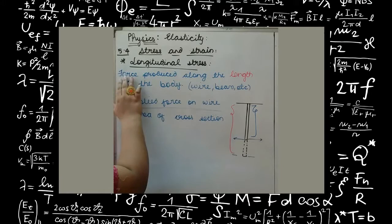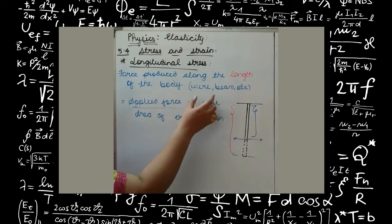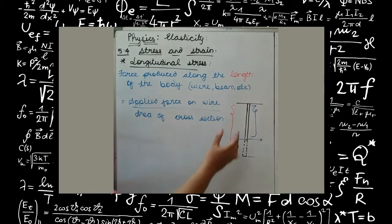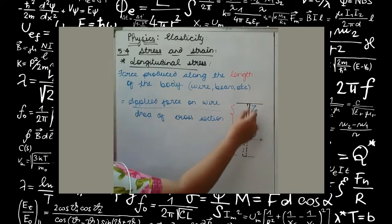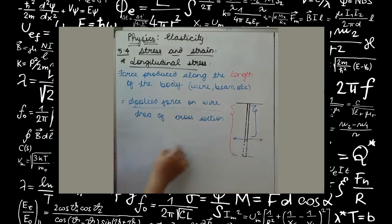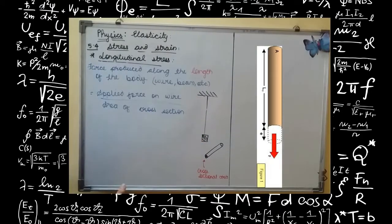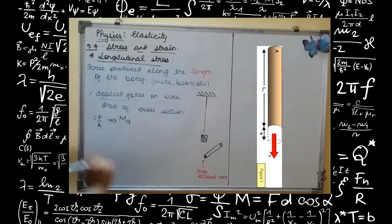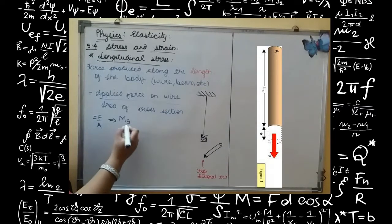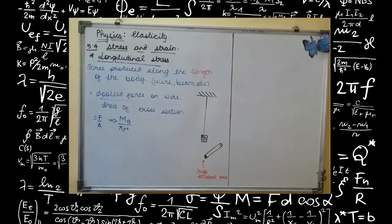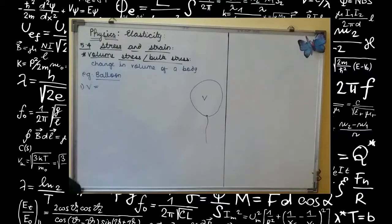Longitudinal stress is the force produced along the length of the body — it can be a wire, beam, etc. Taking a wire as an example: this is a wire attached to a rigid support. If I apply force and elongate the wire, there is some elongation produced along its length. In this case, the force is mg — capital M for mass and small g for acceleration due to gravity acting on the wire — and the area is πr², since the wire has a circular cross-section.